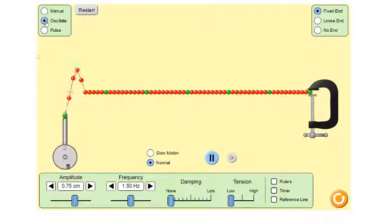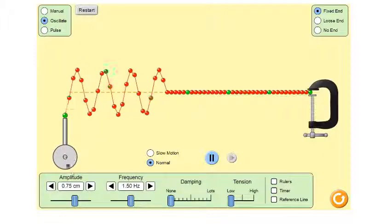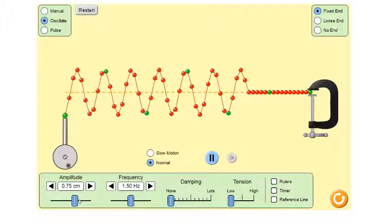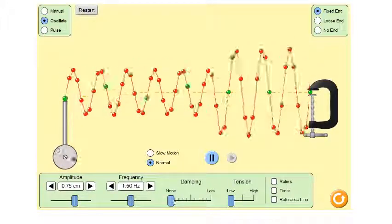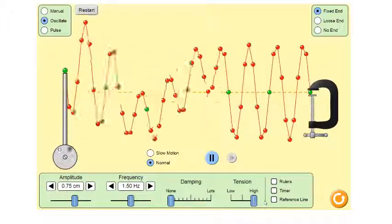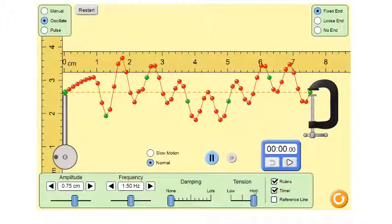Make sure you're on continuous mode or oscillate mode. Set your amplitude to 0.75 centimeters, frequency to 1.5, no damping, and high tension. Turn on your rulers and timer.